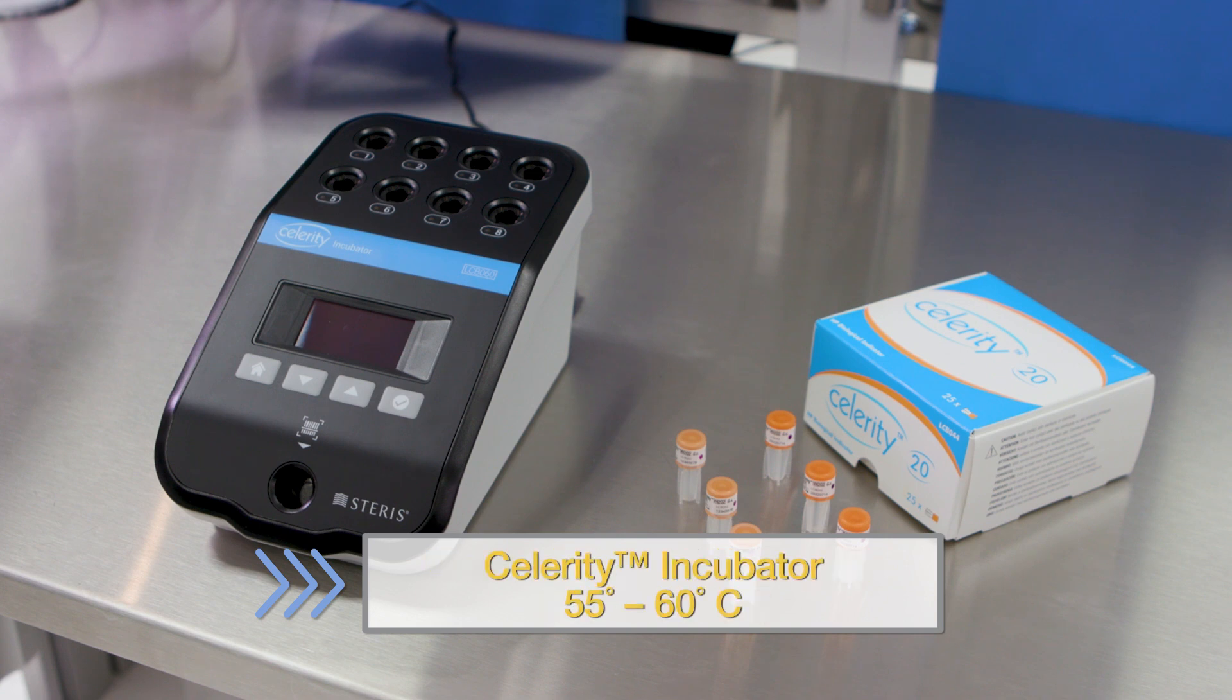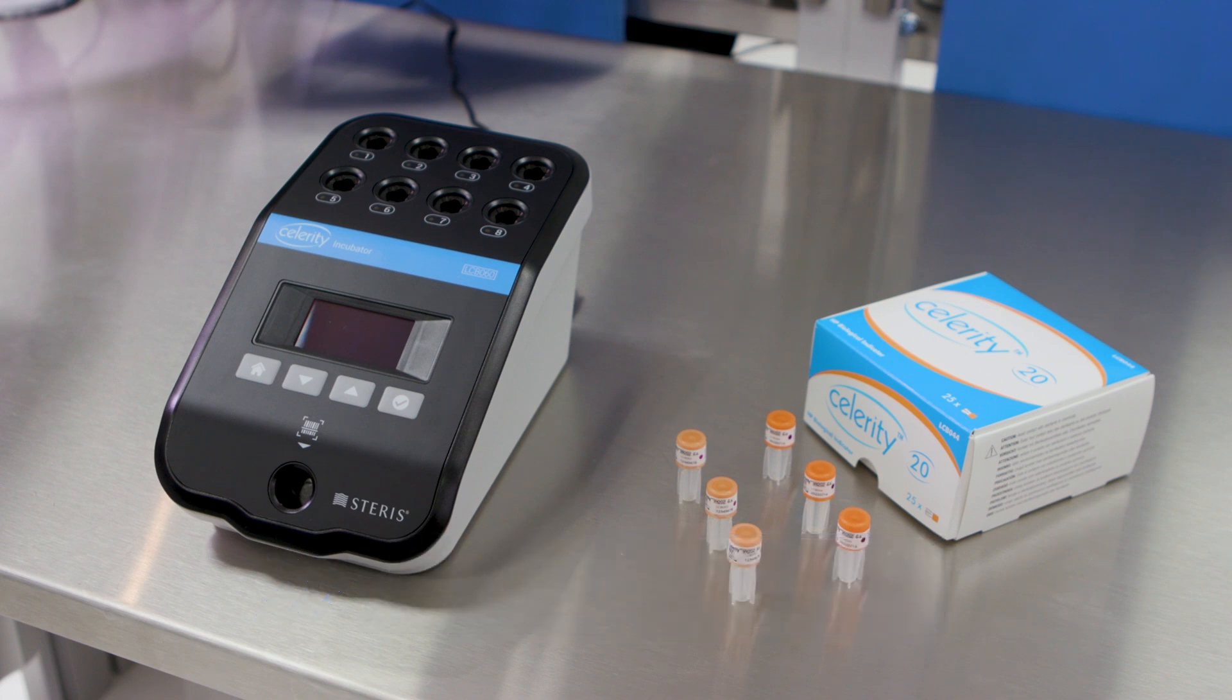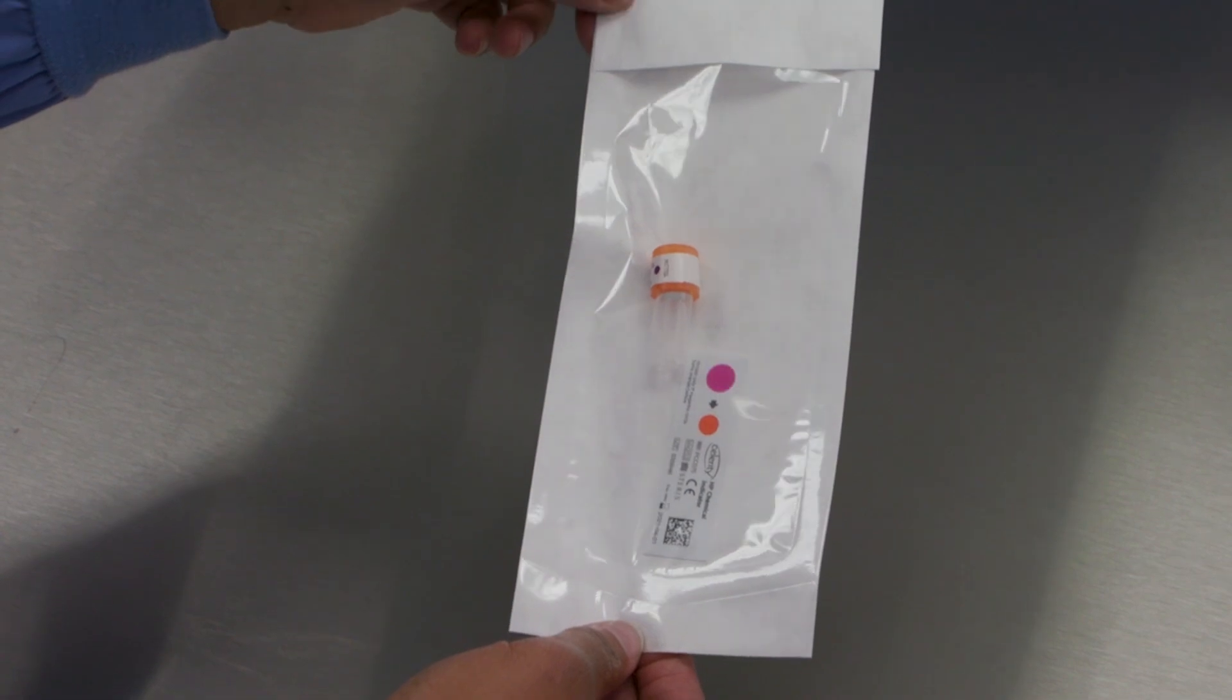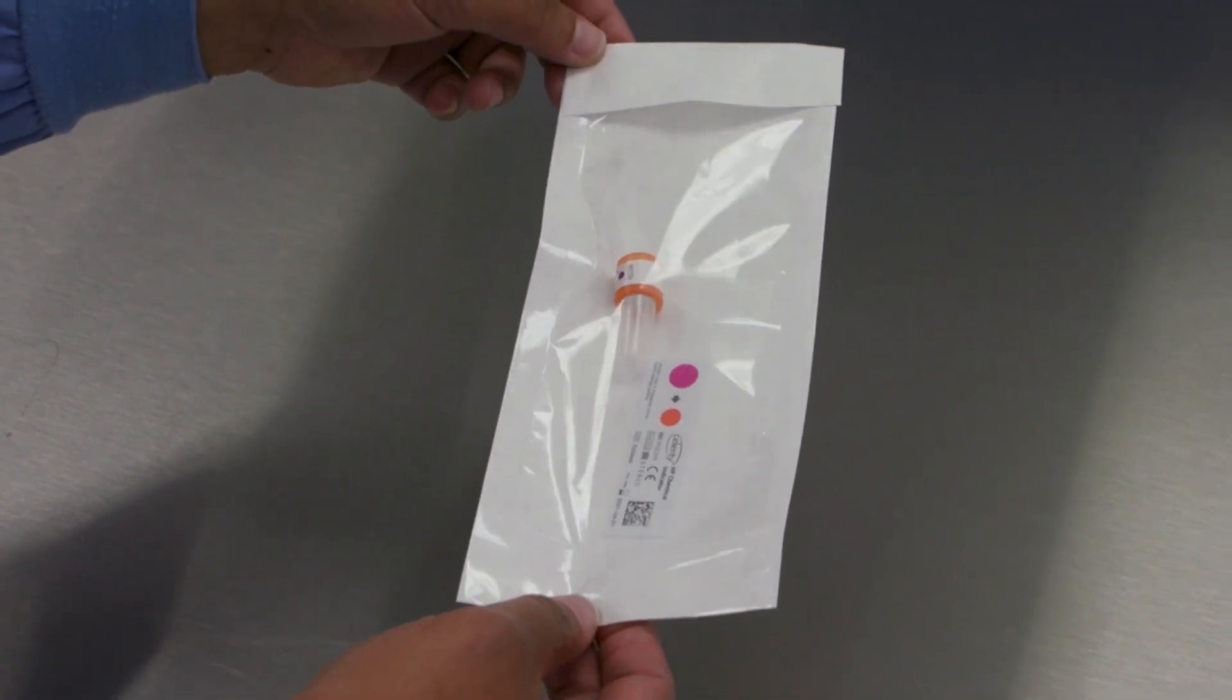Celerity incubator set at 55 to 60 degrees Celsius and warmed up for 30 minutes to incubate and read the results. Chemical indicators intended for use in VPRO or STERAD sterilizers. Appropriately sized pouch intended for use in VPRO or STERAD sterilizers.